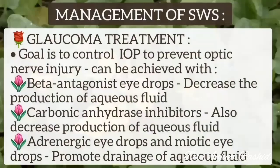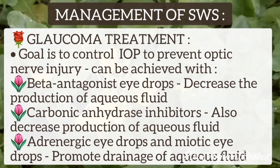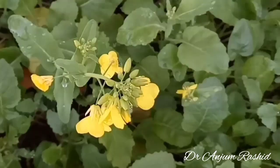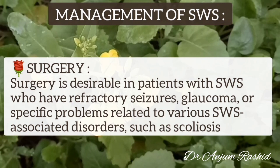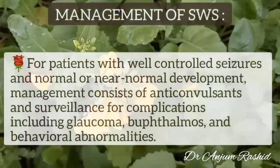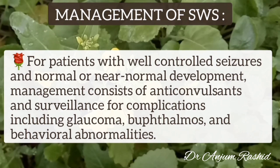Glaucoma should also be treated. The goal is to control raised intraocular pressure to prevent optic nerve injury. This can be achieved with beta antagonist eye drops, which decrease the production of aqueous fluid, carbonic anhydrase inhibitors, which also decrease production of aqueous fluid, and adrenergic and miotic eye drops, which promote drainage of aqueous fluid. Surgery is desirable in patients with refractory seizures, glaucoma, or specific problems such as scoliosis. For patients with well-controlled seizures and normal or near-normal development, management consists of anticonvulsants and surveillance for complications including glaucoma, buphthalmos, and behavioral abnormalities.